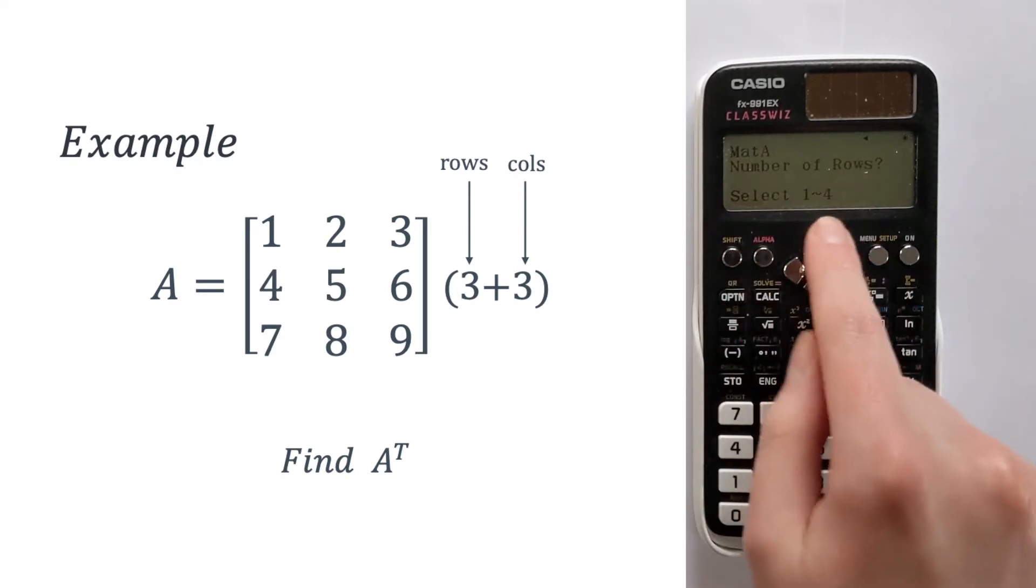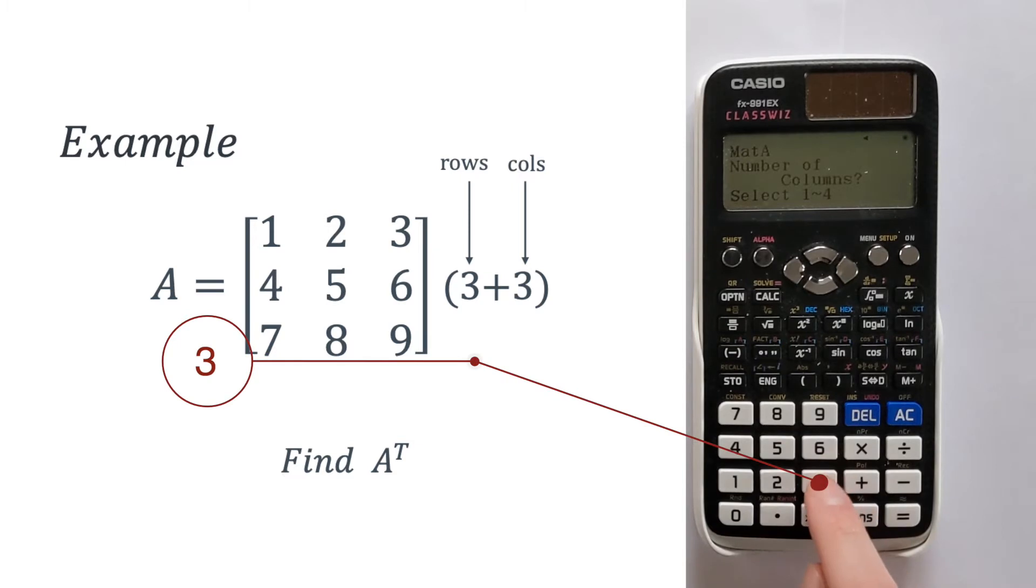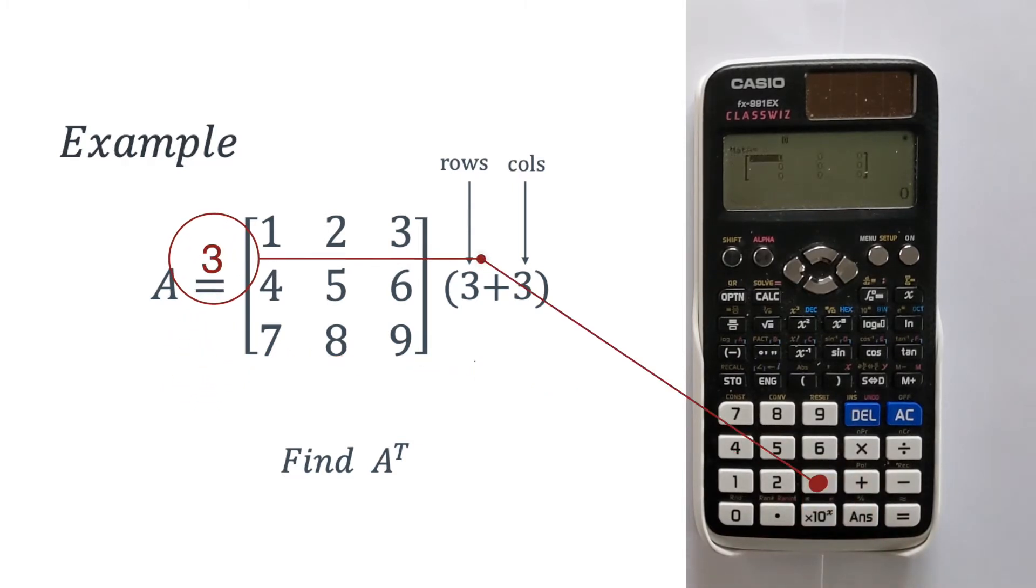So we've got number of rows is going to be three. Then the number of columns is going to be three as well. And then it will ask us to enter our data.